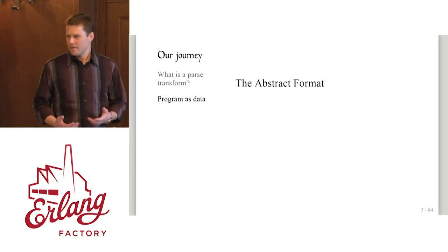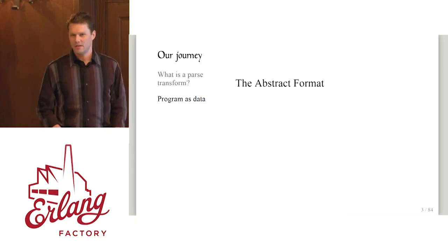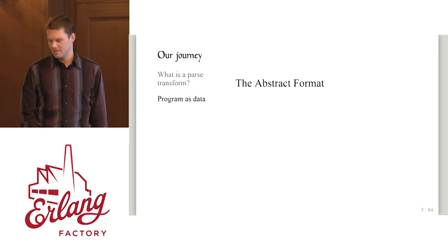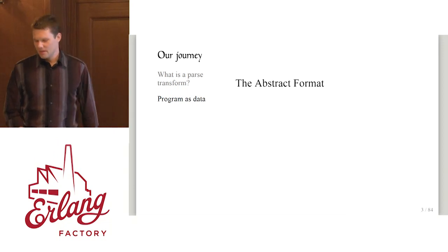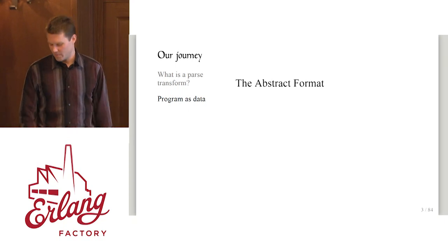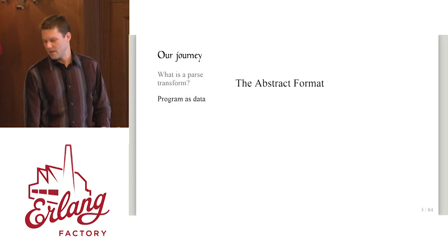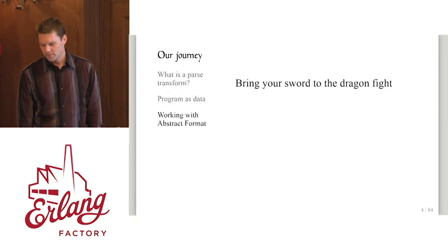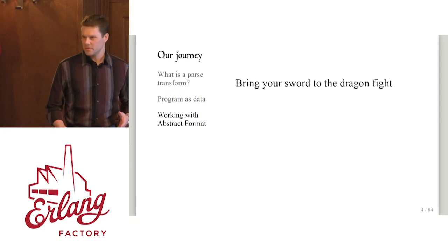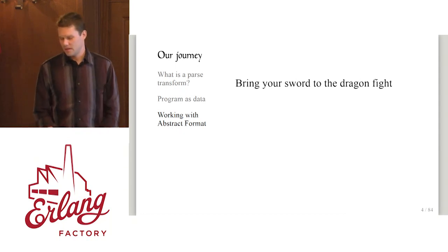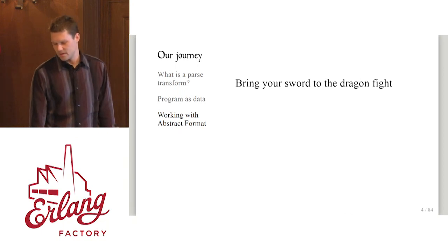If you're going to manipulate a program, you have to represent it as data. You don't want to just manipulate text. The abstract format is how you do this in Erlang — this is the format that your program takes on as data as it's going through the compilation process. We'll look at some tools that let us work with this abstract format. It's, as you might imagine, rather complex, so there are tools that can help us deal with this.